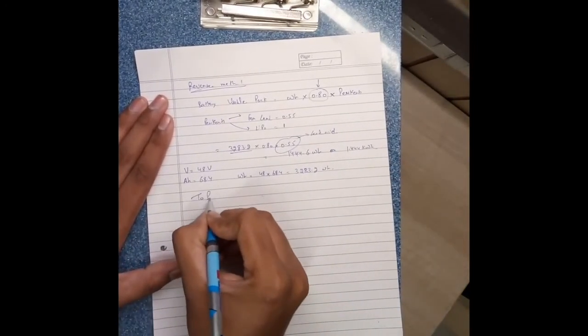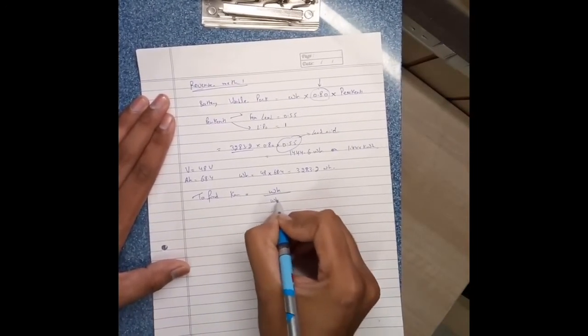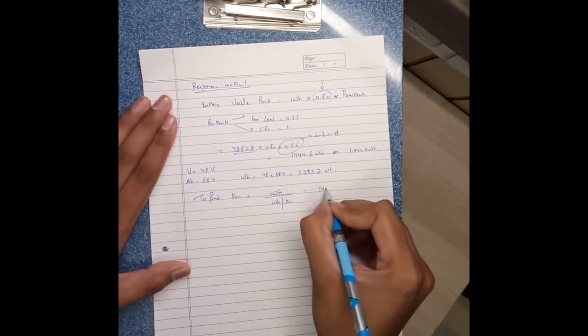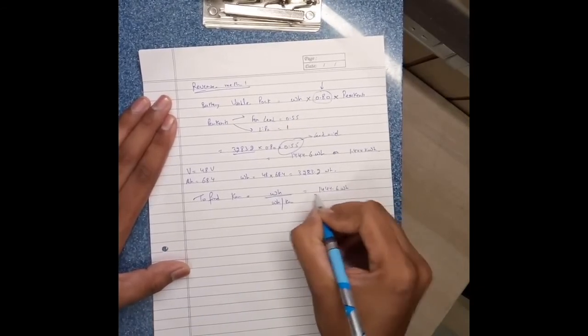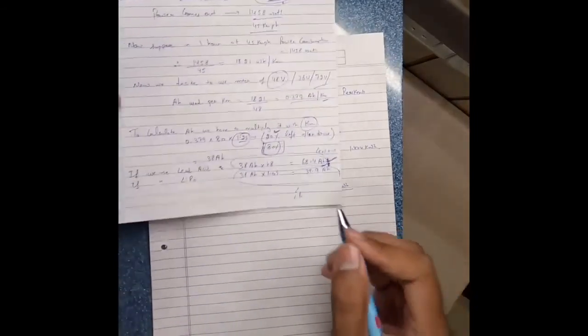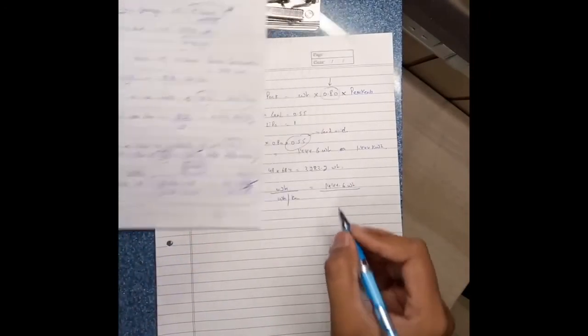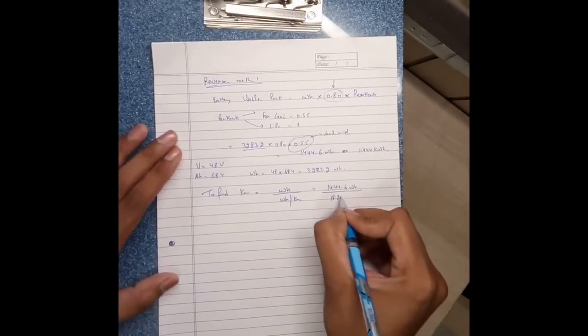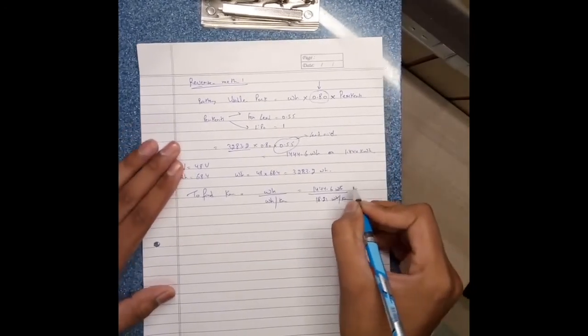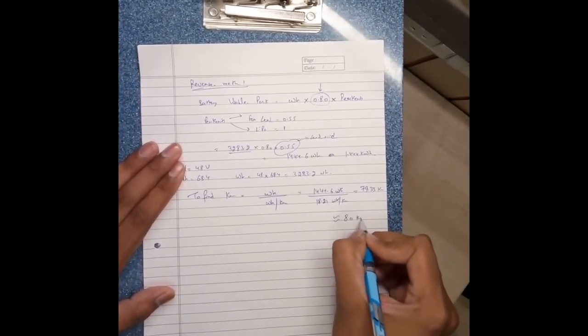Now to find kilometers, watt-hour divided by watt per kilometer. Now watt-hour equals to 1444.6 watt-hour divided by watt per kilometer. Watt per kilometer cancels and it comes equals to 79.33 kilometers, which is approximately equal to 80 kilometers.